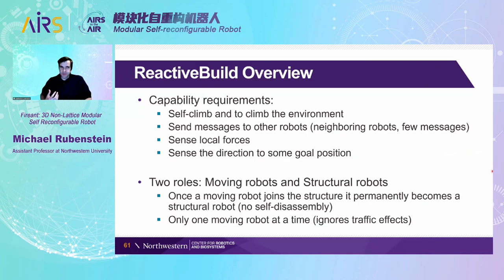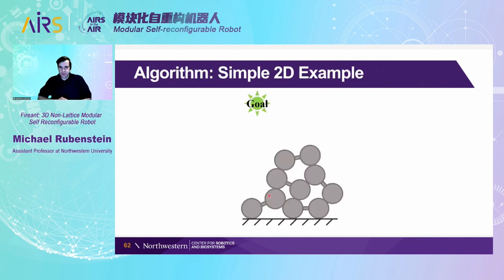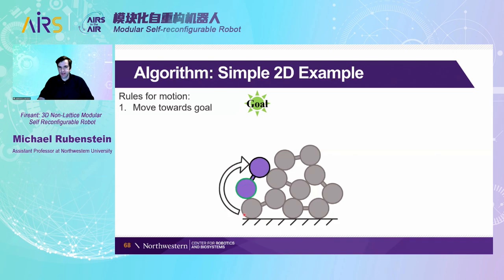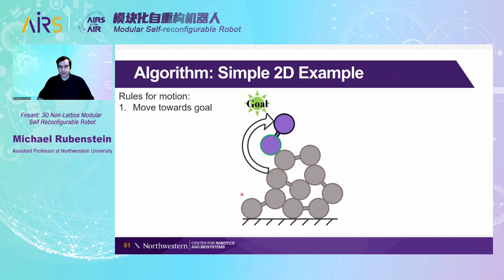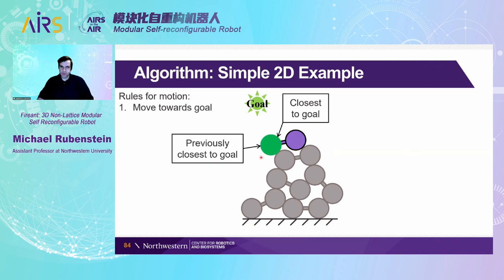The requirements for this system are very similar to what FireAnt 3D is capable of — basically we're simulating the abilities of FireAnt 3D. We expect robots to climb over versions of themselves, send local messages to neighbors, and sense direction to some goal position. The robots take on two roles: they start as a moving robot, and once they reach a position to join the structure, they permanently become part of the structure. In a simple example: with a goal position and an initial group of robots, the robot looks at which dock is closest to the goal and flips over that dock, repeating until the dock it just flipped over is still closest — it's reached a local minimum and stops there to join the structure.